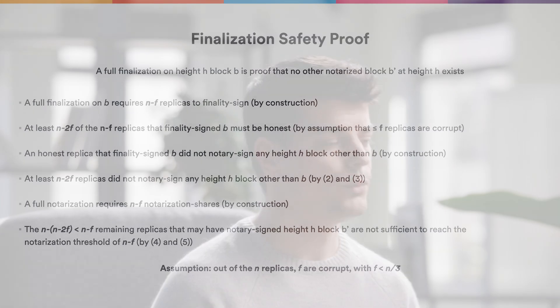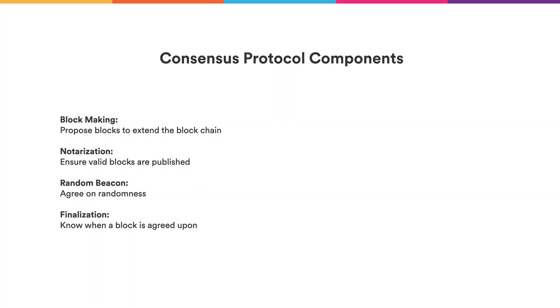In summary, we have a consensus protocol consisting of four components: the block maker creates candidate blocks to extend the blockchain; notarization identifies valid blocks; the random beacon ranks block makers and reduces the number of notarized blocks per round; and asynchronous finalization lets us know when a blockchain is actually agreed upon without relying on networking assumptions. Together, this allows us to use replication within a subnet, giving us the security and reliability we want from the internet computer.